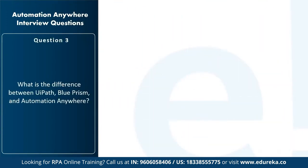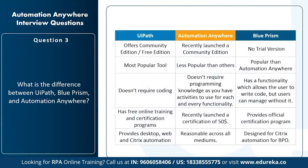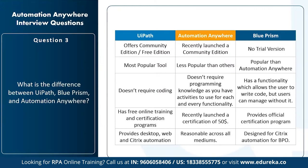The next question is: what is the difference between UiPath, Blue Prism, and Automation Anywhere? UiPath offers a community edition or free edition which you can use for a lifetime. Automation Anywhere has recently launched a community edition, plus an enterprise edition with a 30-day trial, and the community edition is also free for lifetime. Blue Prism has no free edition and offers no trial version — you must purchase a license to start automating tasks.